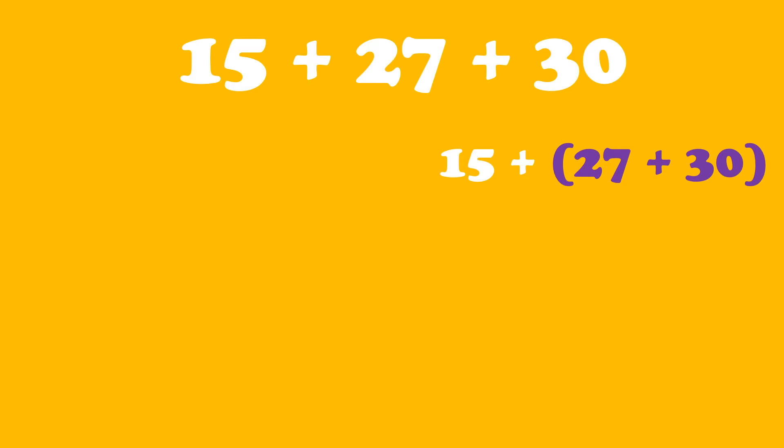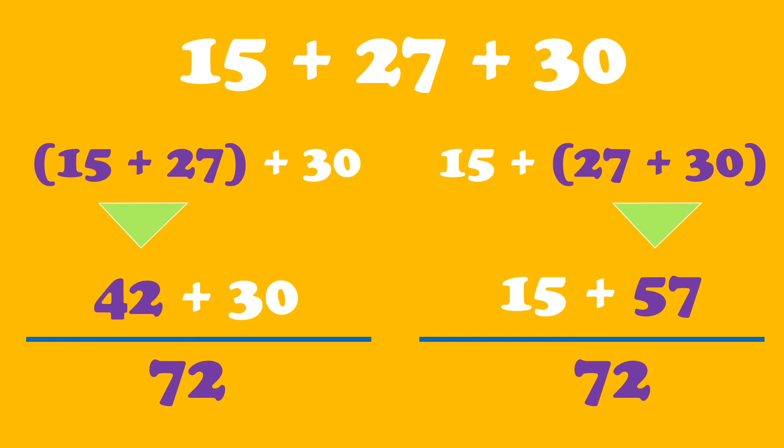And this one, we're grouping the 27 and the 30, and the 15 is separate. It equals 57 plus the 15, which equals 72. And see here, it works for both.